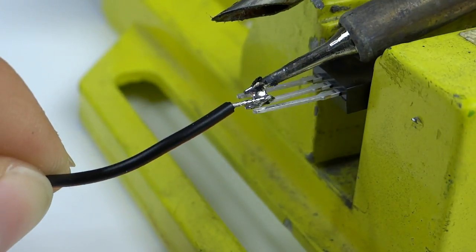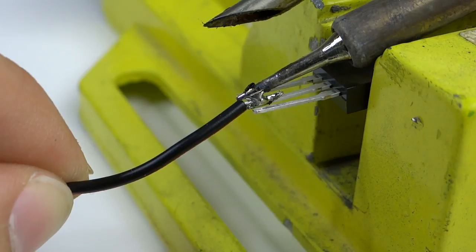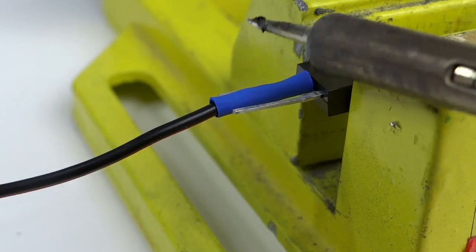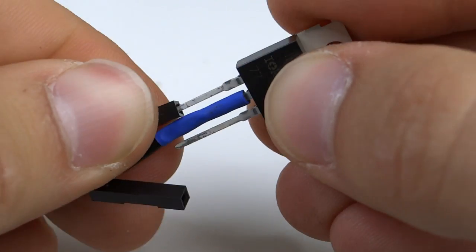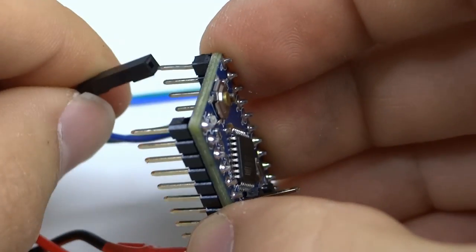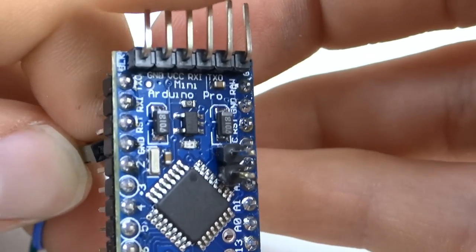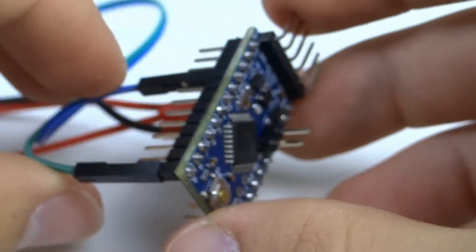Let's solder a black cable to the center pin of MOSFET, also protect it with sleeve. Then we can use two breadboard cables to connect two other MOSFET pins to Arduino.